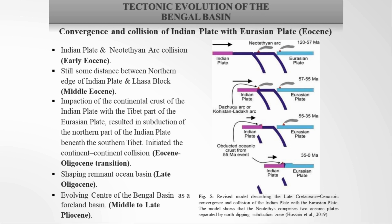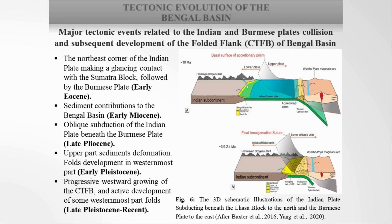During the Paleocene, the Indian plate collided with the inter-oceanic arc but not yet with the Eurasian plate. During the Eocene-Oligocene transition, the continental crust of the Indian plate impacted with the Tibetan part of the Eurasian plate. As a result, the northern part of the Indian plate subducted beneath the southern Tibet, and continent-continent collision initiated. In Early Miocene, sedimentation took place into the Bengal Basin from the Indo-Burman ranges due to subduction of the Indian plate beneath the Burmese plate.